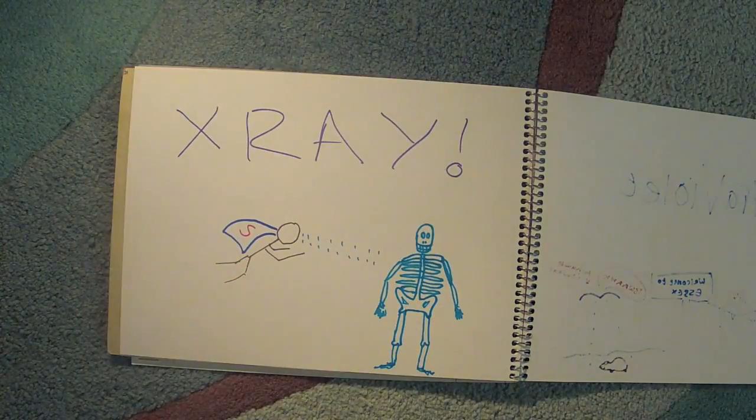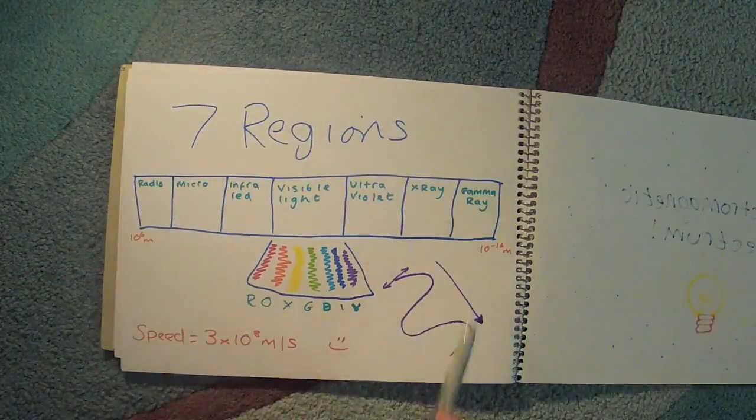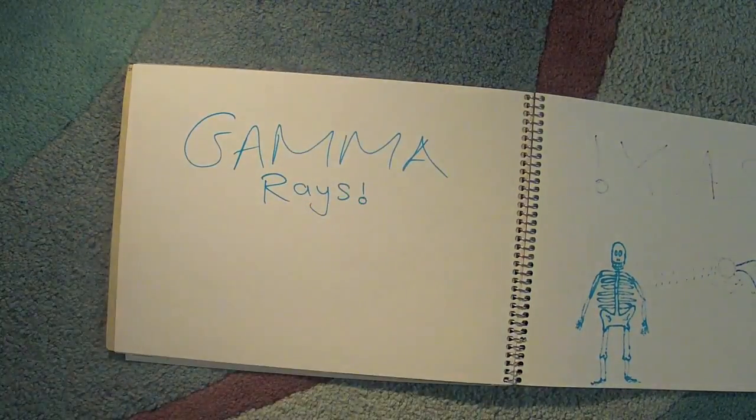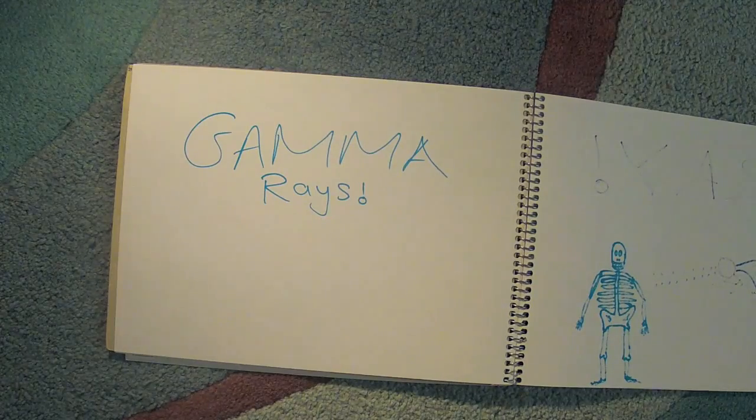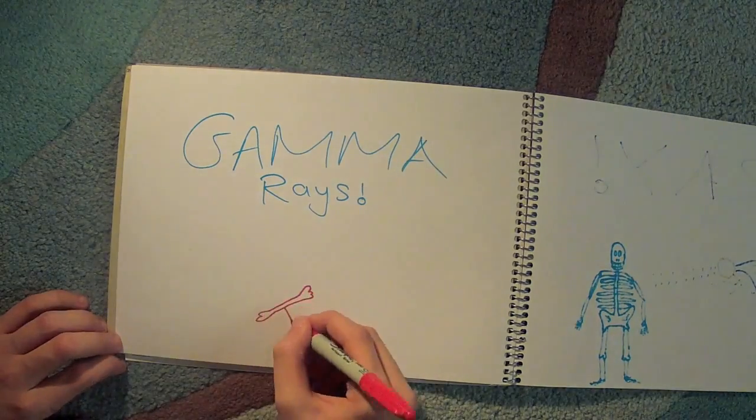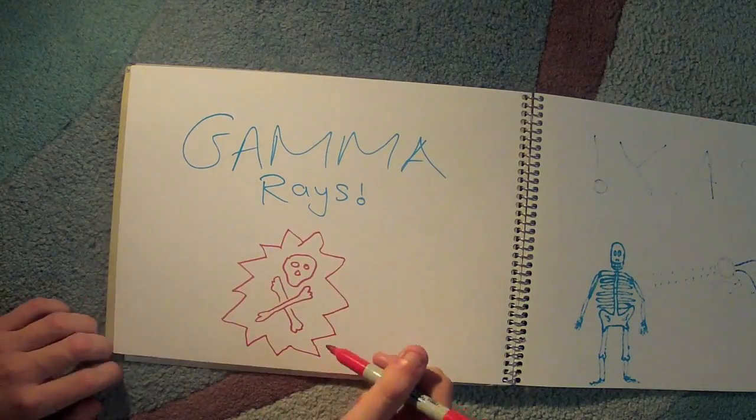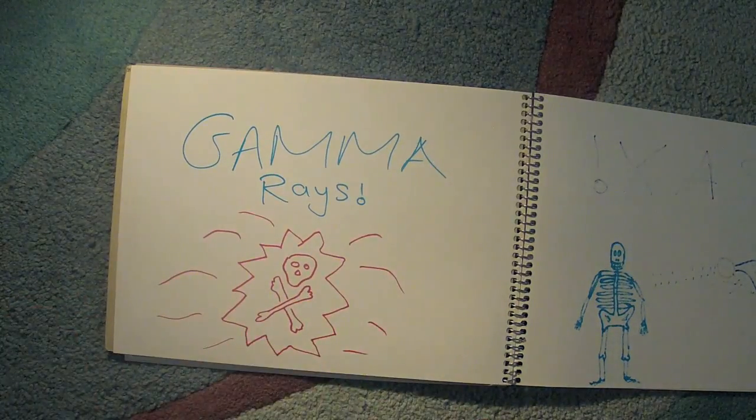And finally, gamma rays. These overlap with X-rays a fair bit. They have a wavelength of ten to the minus ten meters to ten to the minus sixteen meters. They also, like X-rays and ultraviolet, are used in sterilization, medical treatment, and medical imagery. They are the most ionizing waves and are the last in our spectrum.